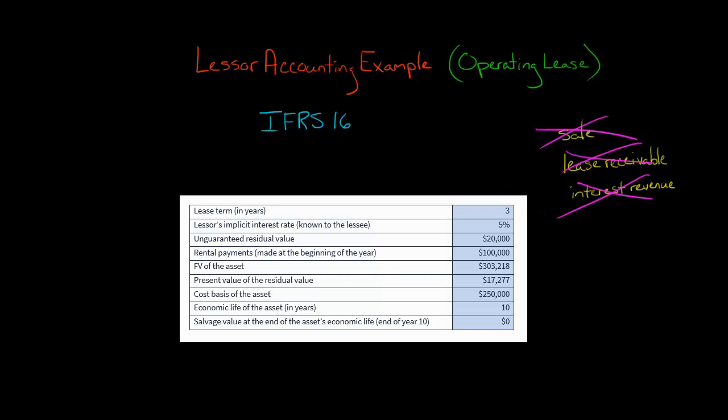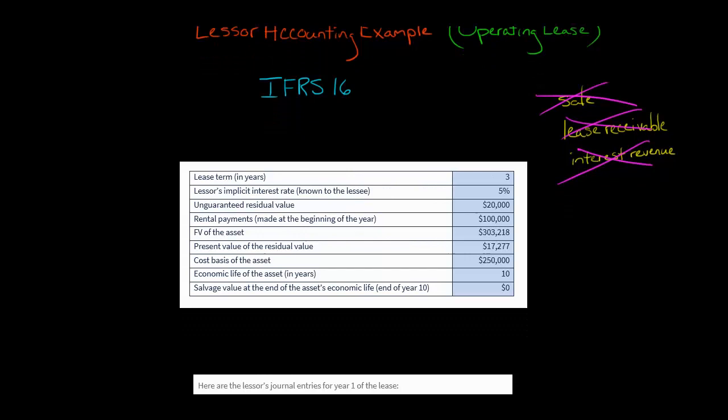Let's say we've got a three-year lease with rental payments of $100,000 a year, with the first payment made at the beginning of the year — so day one of the lease, there's a $100,000 payment from the lessee to the lessor. The cost basis of the asset is $250,000 to the lessor, and its economic life is 10 years. Assuming straight-line depreciation and a salvage value of zero at the end of year 10, we would have $25,000 of depreciation expense each year.